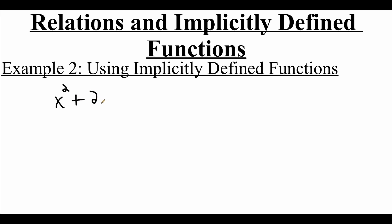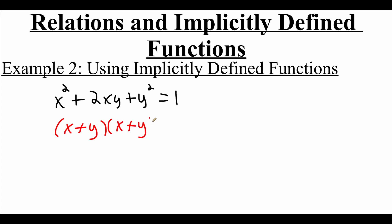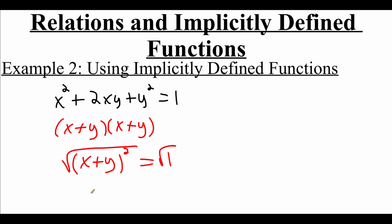We're going to look at another relation and describe its graph using implicitly defined functions. We're going to look at the relation x squared plus 2xy plus y squared equals 1. The left-hand side looks really tricky to work with, but this is actually a nice factorable expression. We could factor this into (x plus y) times (x plus y), and because it's a repeated factor we can shorten this into being (x plus y) squared equals 1. Our goal is to solve this to get y alone, so I'm going to square root both sides. On the right-hand side when I square root 1, I have to remember I get two answers: a positive 1 and a negative 1.